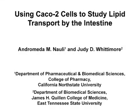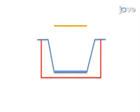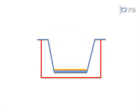The overall goal of this procedure is to study the transport of lipid-soluble molecules by the intestine. This is accomplished by first placing differentiated CACO2 cells in the permeable membrane insert.